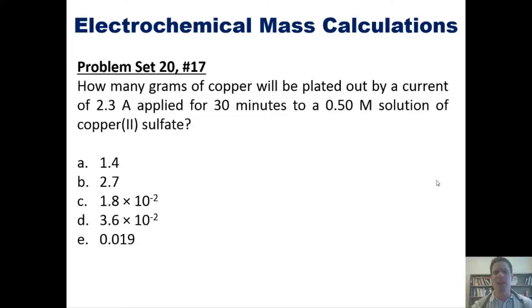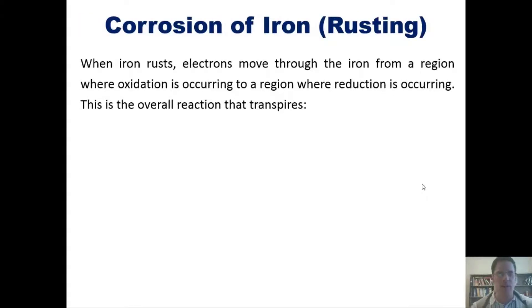I now want to end by teaching you about rusting. Yes, I know you've been waiting for this for a long time. Rusting. Now when iron rusts, or other metals as well, electrons move through the iron from a region where oxidation is occurring to a region where reduction is occurring.